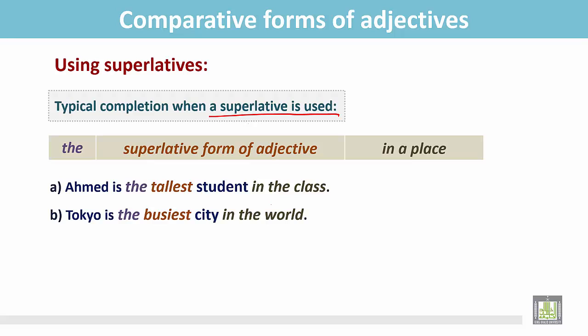Tokyo is the busiest city in the world. There are many other cities like New York, Melbourne, Washington DC, and London, but Tokyo is the busiest city in the world. Here we use the superlative form of the adjective 'busy,' and it is 'the busiest.'